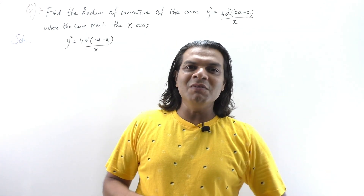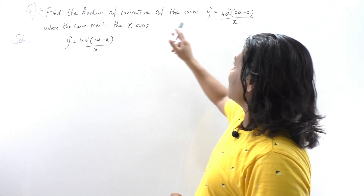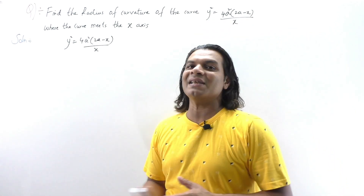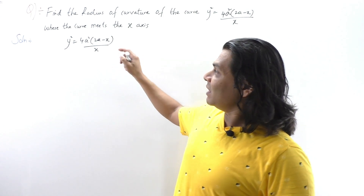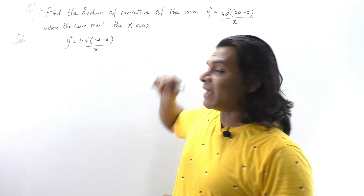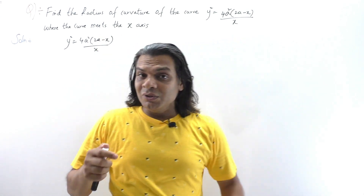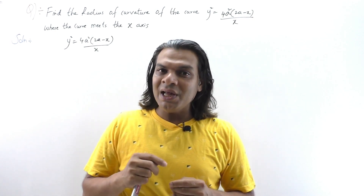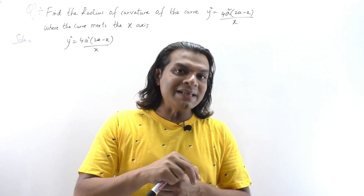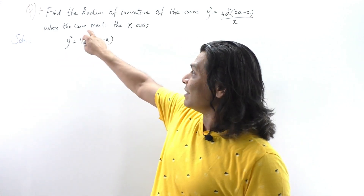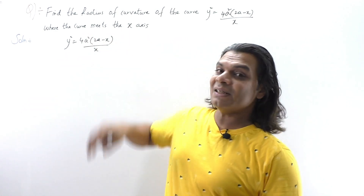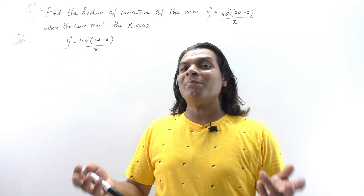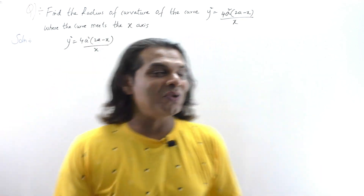The next problem is: find the radius of curvature of the curve y² = 4a²(2a - x)/x where the curve meets the x-axis. It is clearly mentioned the curve meets the x-axis. Remember: when the curve meets the x-axis, the coordinate y = 0; when it meets the y-axis, then x = 0. Since the curve meets the x-axis, we put y = 0 to find the points of intersection.